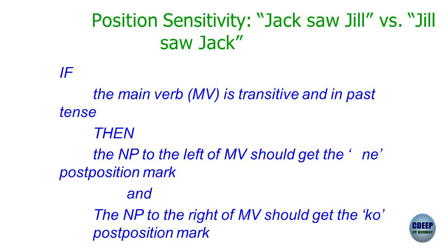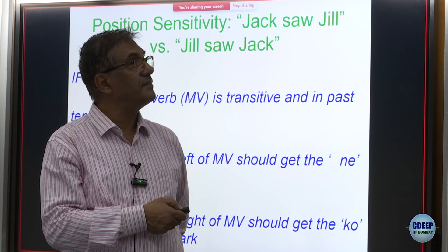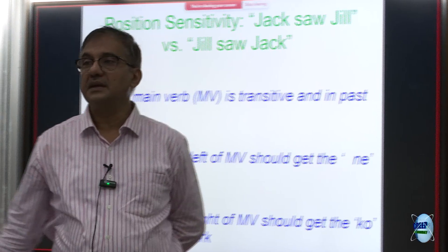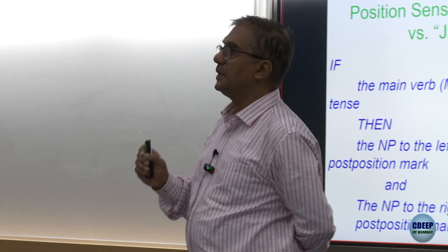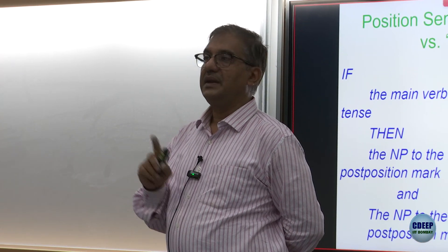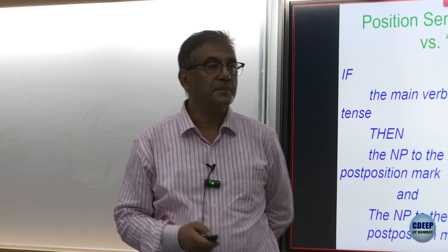There is a notion of position sensitivity especially for morphologically weak languages. For example, in Hindi: if the main verb is transitive and in past tense, the noun phrase to the left of the main verb gets the postposition 'ne,' and the noun phrase to the right gets the postposition marker 'ko.' Position encodes case information in such languages — there is no explicit case marker; it is the position which encodes that information.